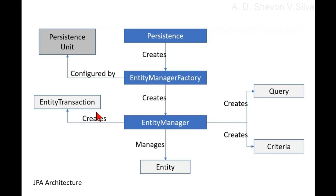An entity transaction is a set of operations that either fail or succeed as a unit. A database transaction consists of a set of SQL operations that are committed or rolled back as a single unit. Any kind of modification initiated via an entity manager object is placed within a transaction. The entity manager object also helps in creating an entity transaction.